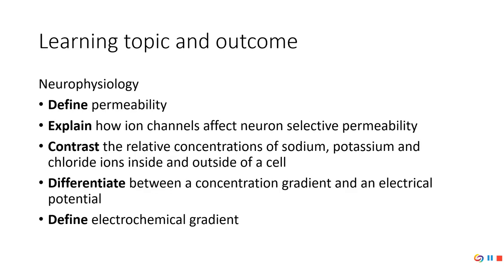These are the five things that we're going to go through over the next six or seven slides. Really what it comes down to: in order for a neuron to send a signal to let some part of the body do something — like contract a muscle, or to not do something — it comes down to the movement of ions in and out of the neuron. That's really what it comes down to.